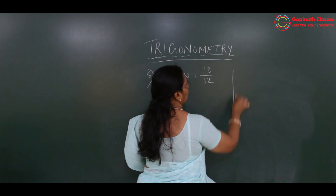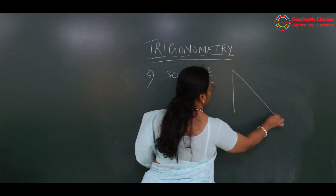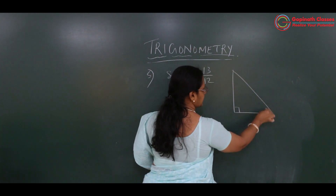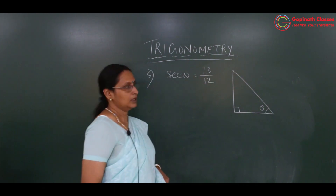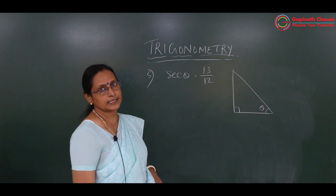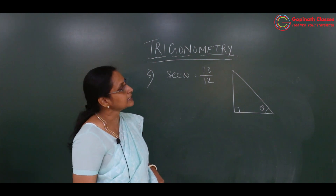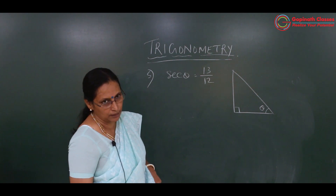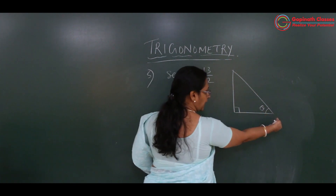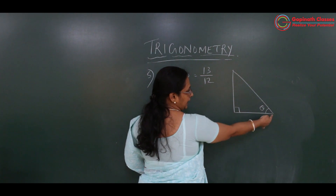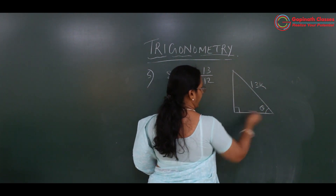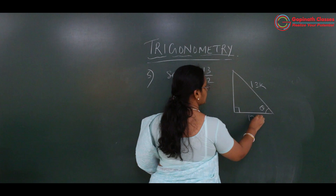Sec theta is 13 upon 12. Let's draw a right angle triangle with one angle theta. Sec is nothing but hypotenuse upon adjacent. So for theta, adjacent is 12k and hypotenuse is 13k.